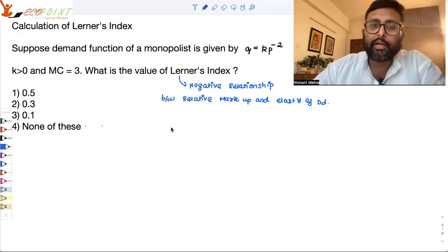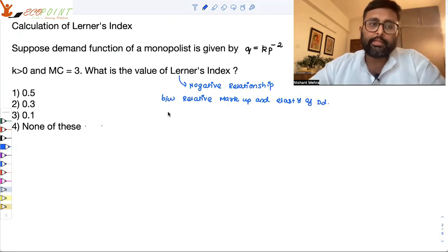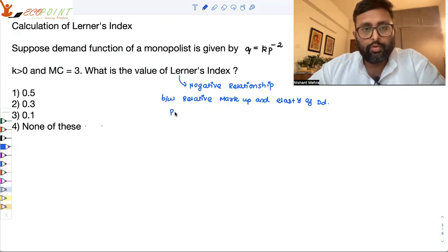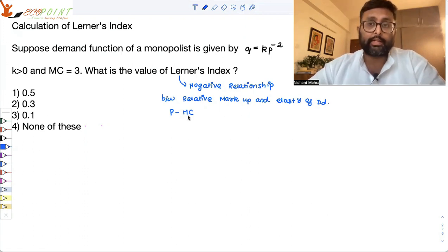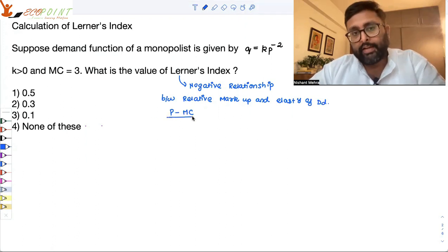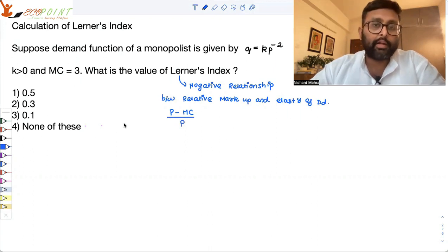So what is the relative markup? Markup is your power to set the price above the marginal cost. So your marginal cost is MC, price is p. So p minus MC is the absolute markup. Aap kitna upor price ko set kar sakte hain? Marginal cost ke yahe absolute markup hai. Isko p se divide kar dijiye.